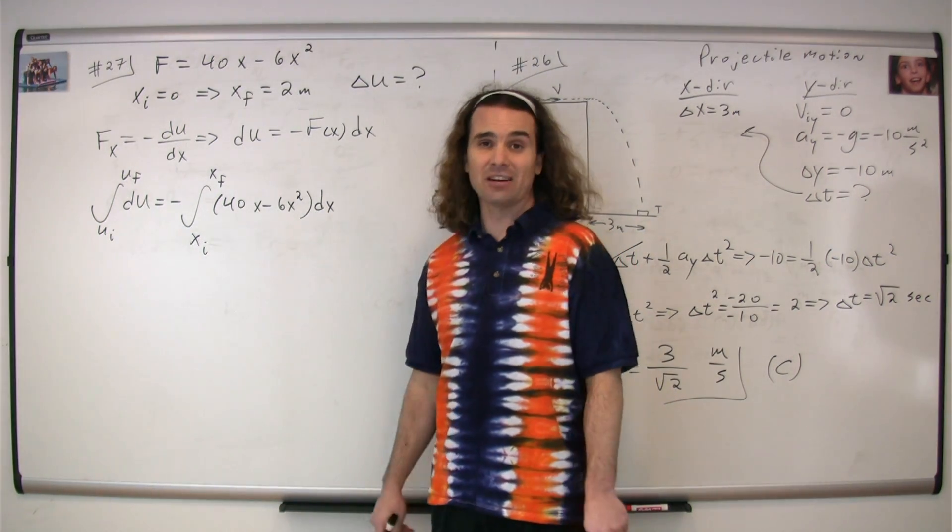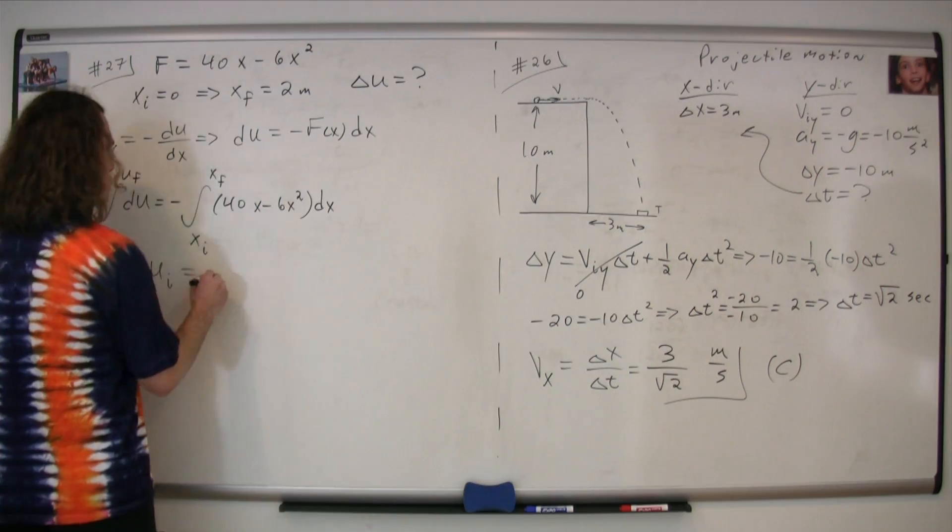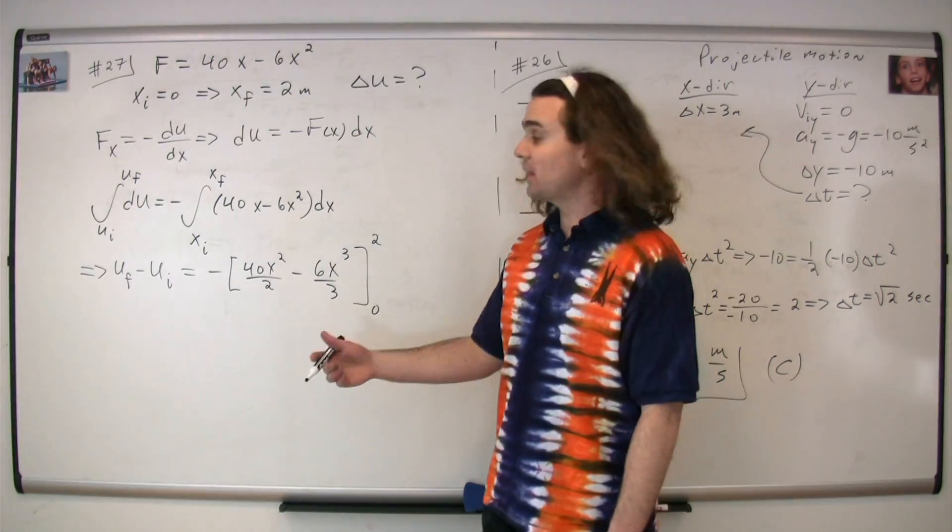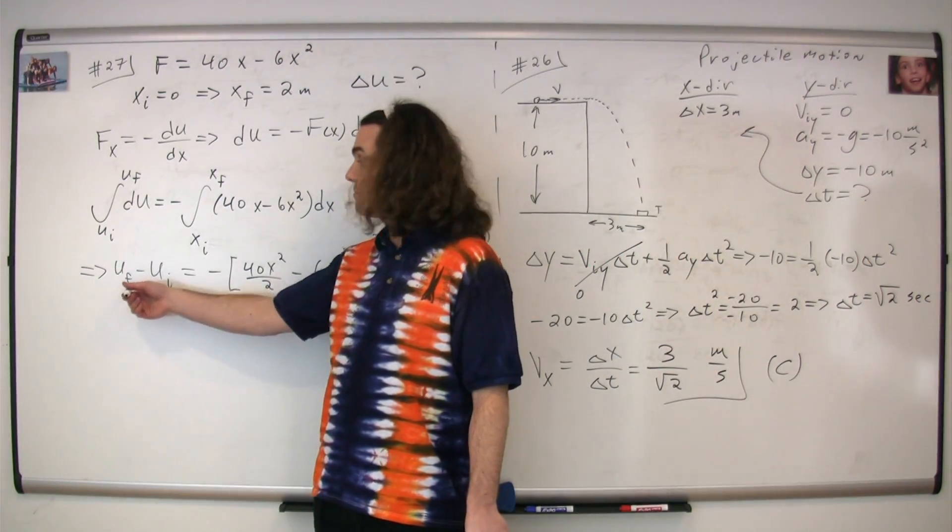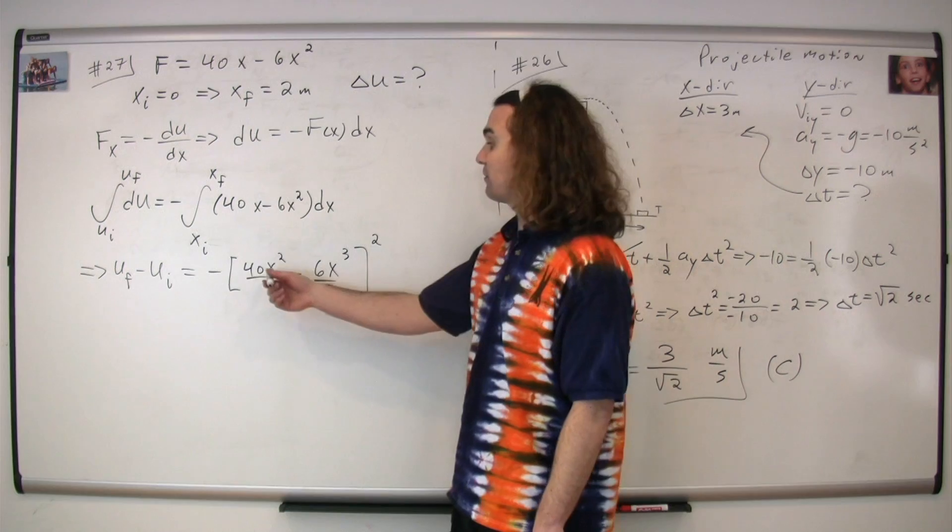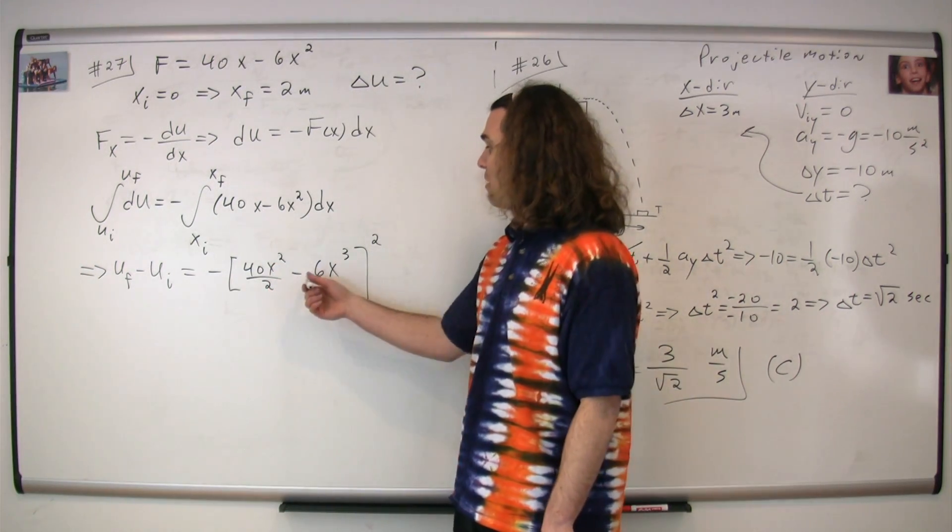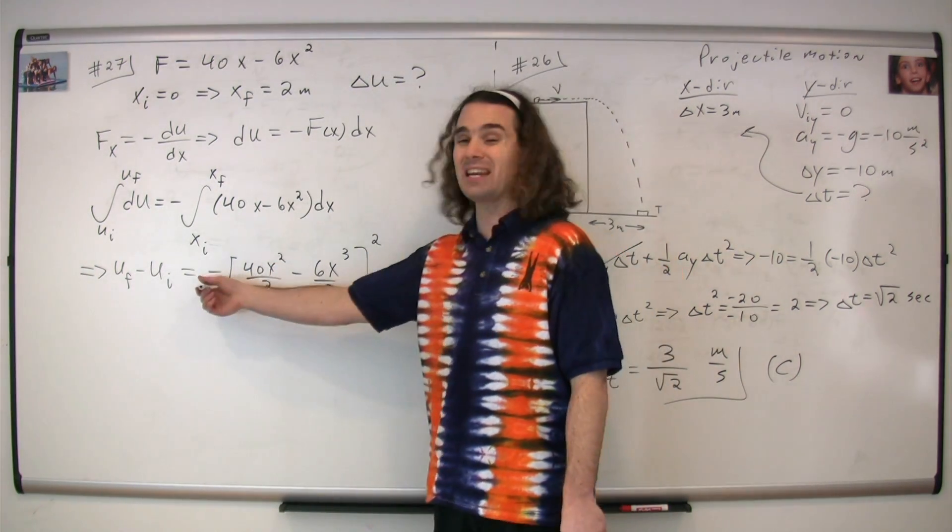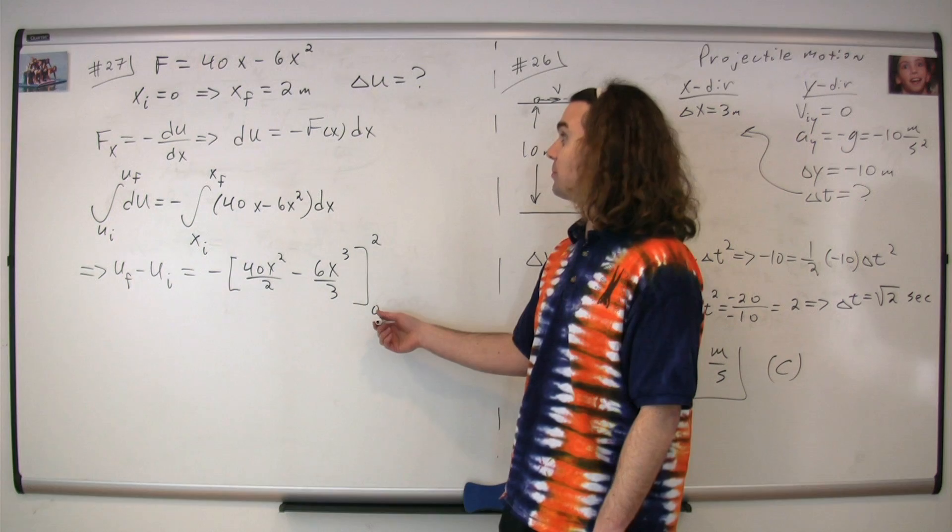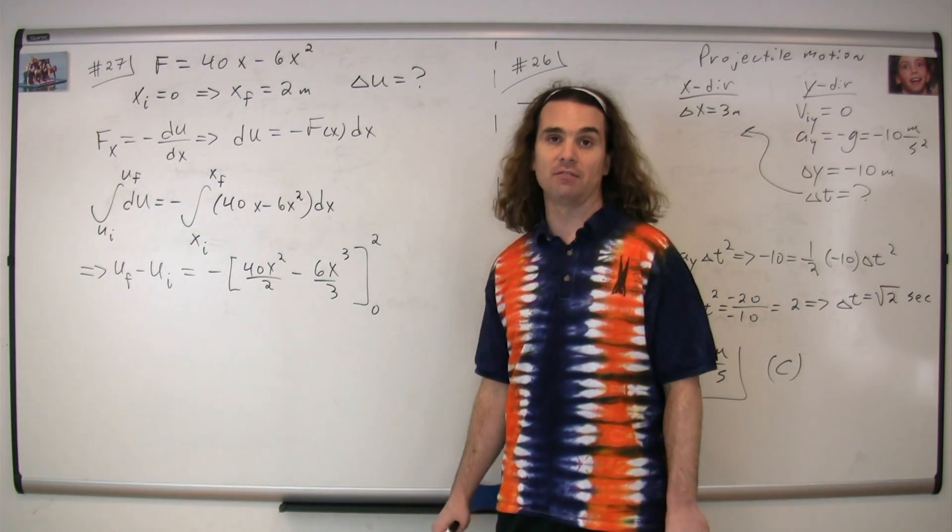So now, we simply take the integral of both sides. So on the left-hand side, we get the final energy minus the initial energy. On the right-hand side, we get 40x squared divided by 2 minus 6x cubed divided by 3, the negative of, from our initial position of zero to our final position of two.